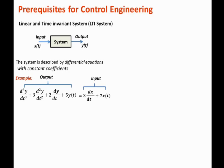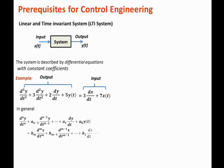The general form of the differential equation can be expressed as follows: there are n terms of the output derivatives and m terms of the input derivatives. So this general form describes the system as n-th order in the output and m-th order in the input.